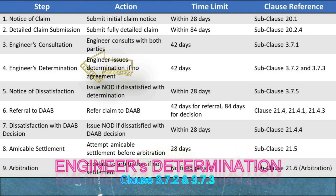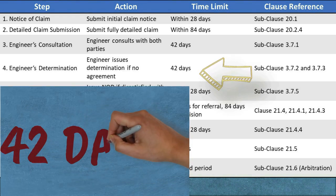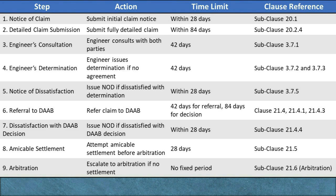Step 4: Engineer's Determination. Action: If an agreement is not reached during the consultation period, the engineer must proceed to issue a determination. This formal determination includes a reasoned decision with supporting calculations, providing a clear statement of the engineer's view on the claim based on contract terms. Time limit: The engineer has an additional 42 days to issue this determination if no agreement was reached, unless a different period has been mutually agreed upon. Clause References: Subclause 3.7.2 — Engineer's Determination; Subclause 3.7.3 — Time Limits. Purpose: The determination stage offers a neutral decision from the engineer, which serves to resolve the claim in a formal manner, minimizing further disagreements and enabling the project to proceed smoothly.